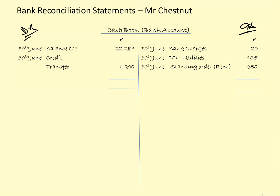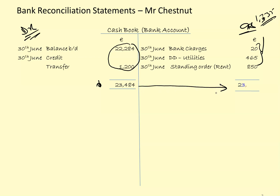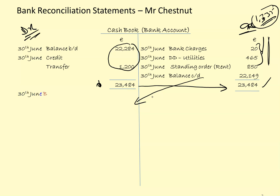Now we need to balance off this account. The debit side is 23,484. The credit side totals 1,335. The debit side is the largest, so I write the column total of 23,484 on both sides. The difference between 1,335 and 23,484 is the balancing figure of 22,149. Brought down, the closing balance on 30th June — which becomes the opening balance on 1st July — is 22,149.